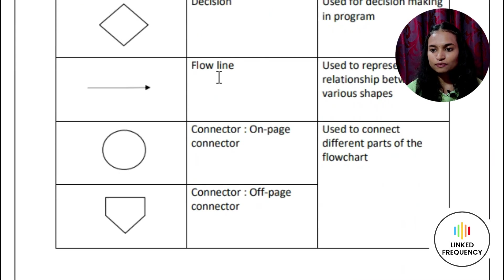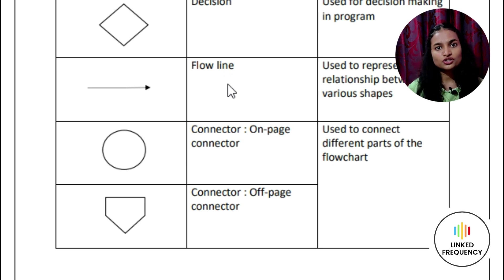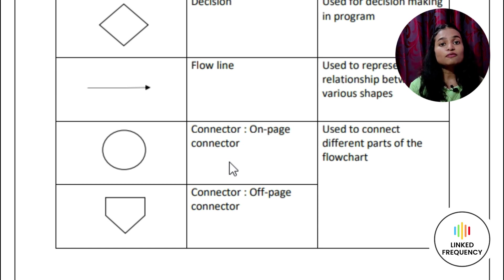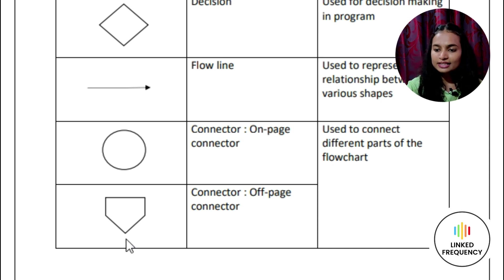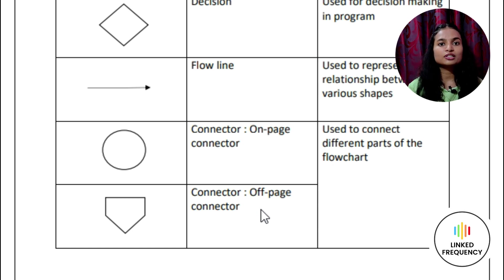Moving on to the next symbol: flowline. Flowline indicates the exact sequence in which instructions are to be executed. Then the last commonly used symbols are connectors. If a flowchart is complex or occupies more than one page, connectors are useful to avoid confusion. There are two types: the on-page connector and the off-page connector. There are a few more symbols which are rarely used; the ones covered here represent the majority of symbols commonly used in flowcharts.